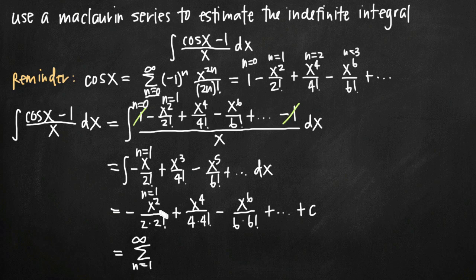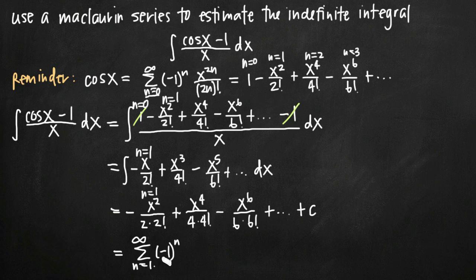Starting with n equals 1, we need to figure out the representation. This is an alternating series that starts with negative — negative, positive, negative, positive, etc. So we include the alternating term negative 1 raised to the n power. When the series starts with a negative, we raise negative 1 to the n power because plugging n equals 1 gives negative 1 to the first power, which is just negative 1, making our n equals 1 term negative, which is what we want.